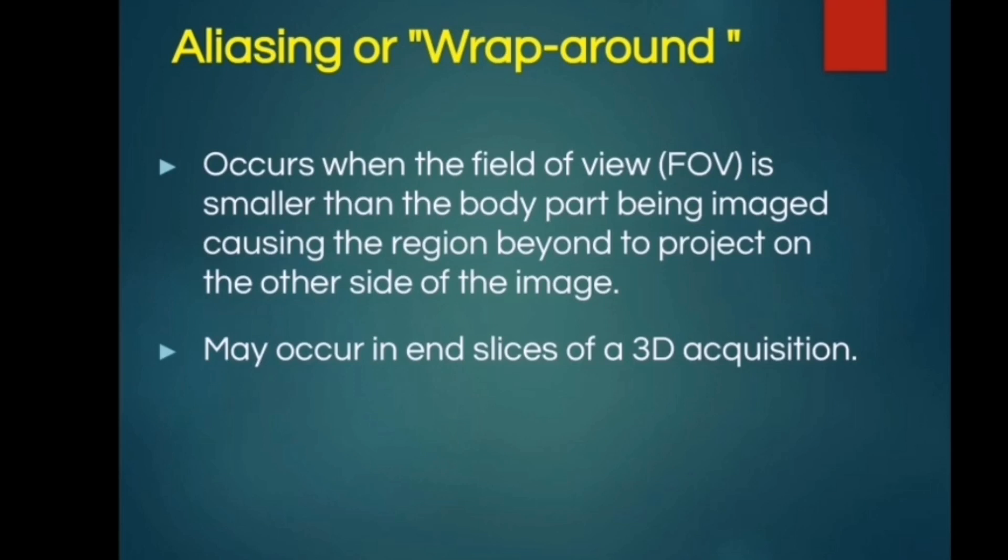An aliasing or wraparound artifact occurs when the field of view (FOV) is smaller than the body part being imaged, causing the region beyond to project on the other side of the image. It can also occur in end slices of a three-dimensional acquisition.